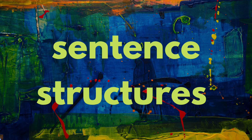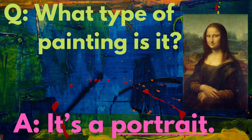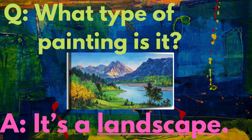Now let's go to our sentence structures. The first question is: What type of painting is it? The answer is: It's a blank. For example — What type of painting is it? The answer is: It's a portrait. Another example — What type of painting is it? The answer is: It's a landscape.